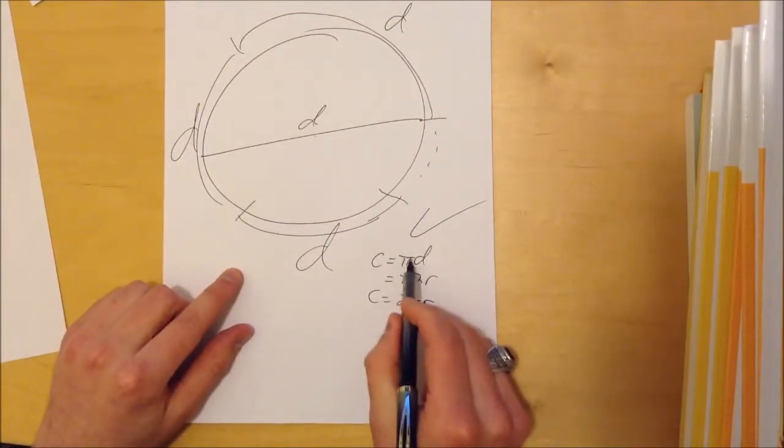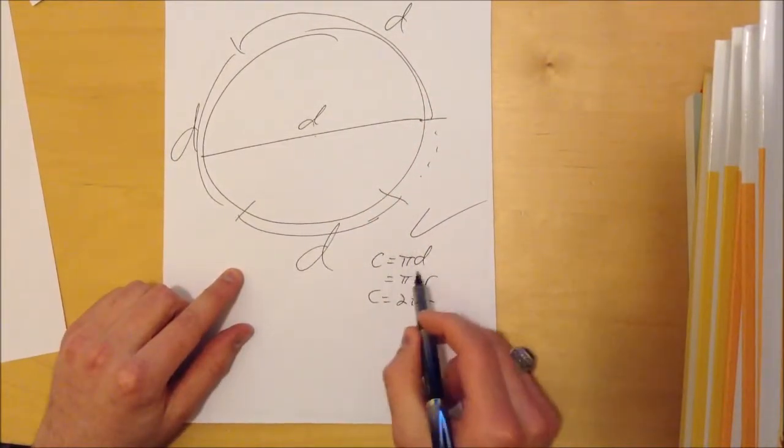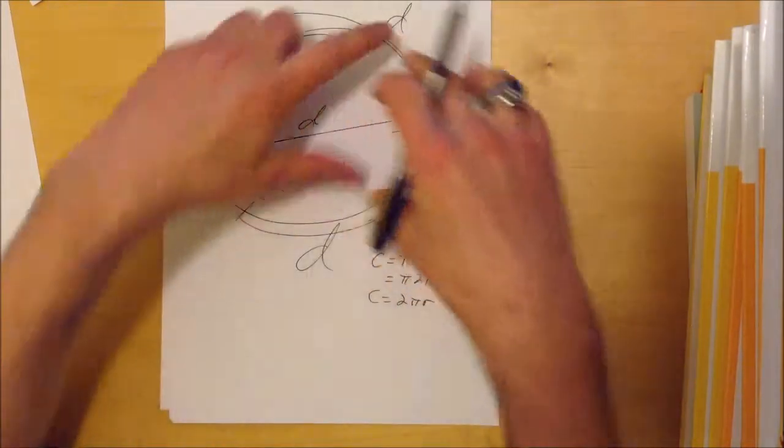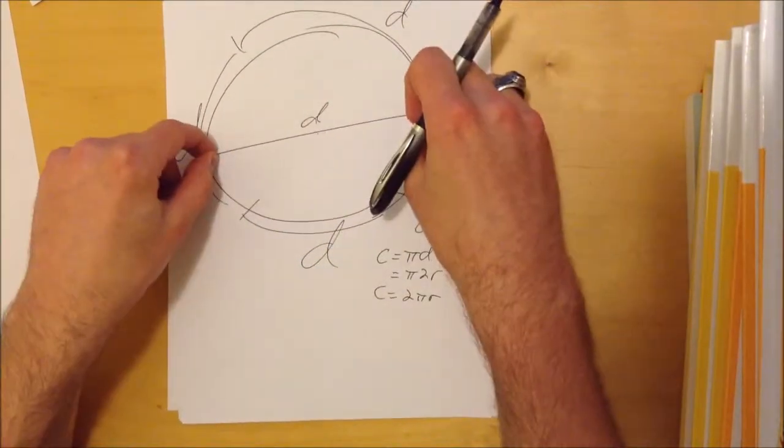This is why pi is initially used for D. Because when you have a circle, it's a lot easier to find the diameter.